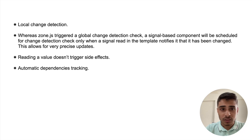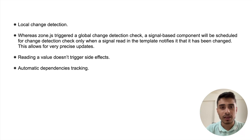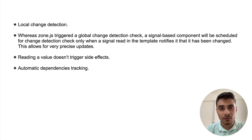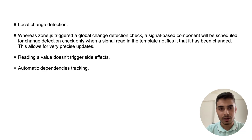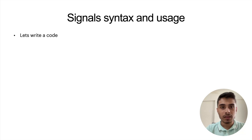These are the problems that signals solve. Signals help with local change detection, whereas Zone.js triggers a global change detection check. Signal-based components will be scheduled for a change detection check only when a signal read in a template notifies it that something has changed. In short, signals allow updates to a precise section of your UI and not the entire component hierarchy. Reading a value doesn't trigger any side effects. Signals also help in automatic dependency tracking — tracking what data objects are being referred to in components — leading to better change detection, re-rendering, and ultimately improved performance.